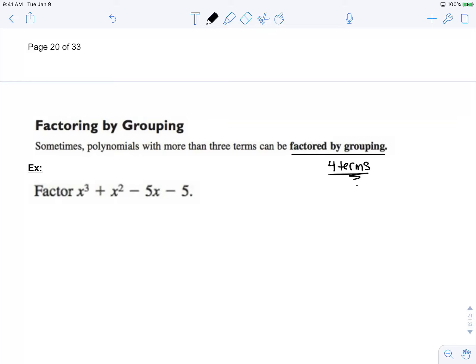So here, if I have this polynomial with four terms, first I look at it and I see there's no overall GCF. Since there are four terms, I can group them and focus on them two at a time.